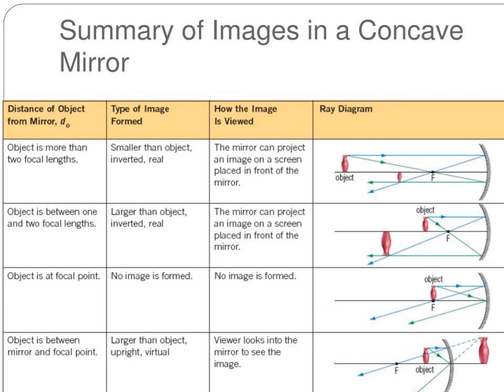When the object is at focal point, at F, no image is formed. That is, the image will be formed at infinity. You can't see it.